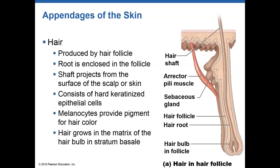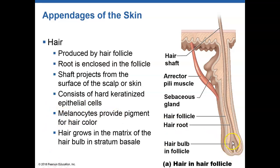Hair is produced in hair follicles. The root of the hair — you can see the hair bulb and the root — is the only part of the hair that's actually living. Right down in the hair bulb is where hair starts forming. As cells move away from the hair bulb, they keratinize and die, which is why it doesn't hurt when you get a haircut. The melanocytes within the hair bulb provide the coloration of our hair.